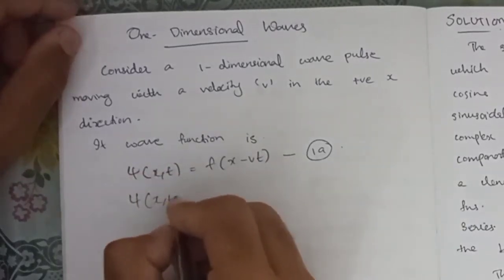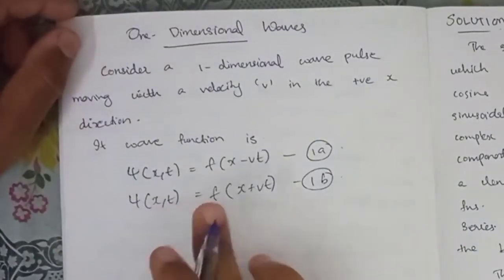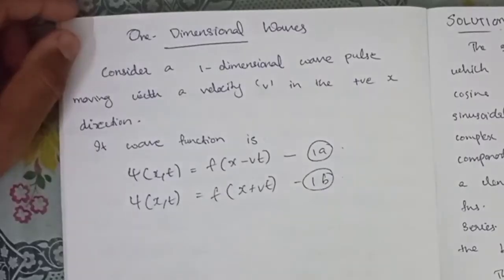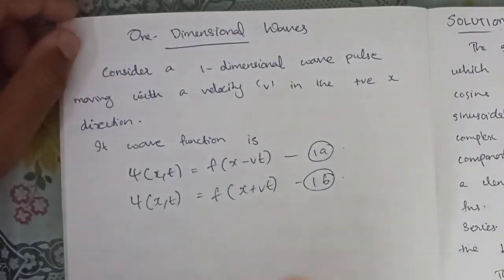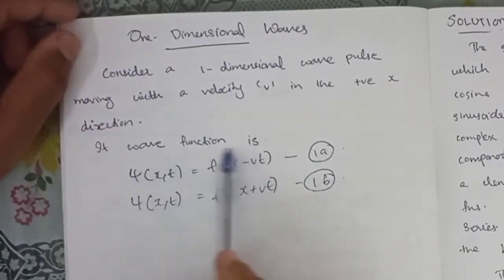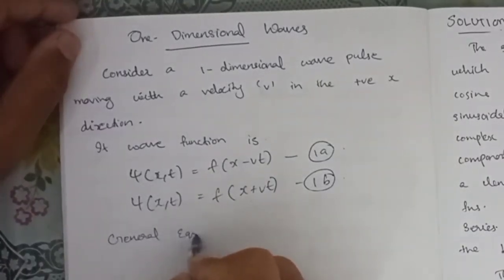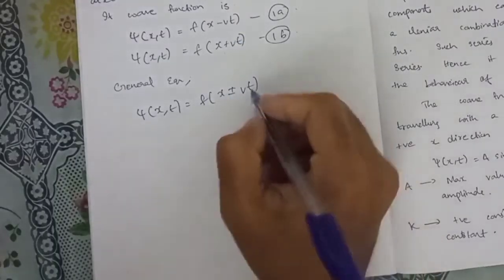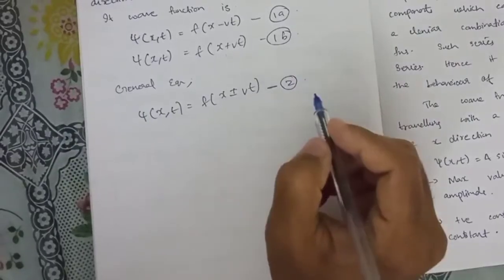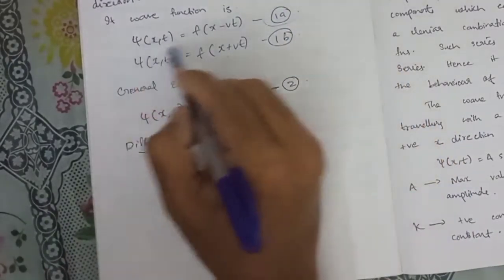I will show you the wave function. ψ(x,t) is equal to f(x + vt). There are two equations: ψ(x,t) = f(x − vt) and ψ(x,t) = f(x + vt). These two equations are combined into the general equation: ψ(x,t) = f(x ± vt). This is equation 1a, the one-dimensional solution.